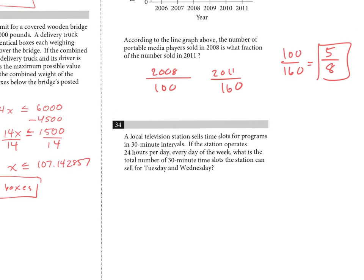Number thirty-four: a TV station operates 24 hours per day and sells time slots in 30-minute intervals. How many slots can it sell for Tuesday and Wednesday combined? Two days equals 48 hours. With two 30-minute slots per hour, that's 48 times 2 equals 96 total slots.